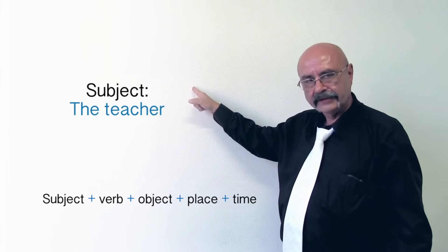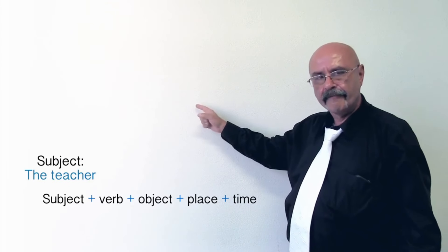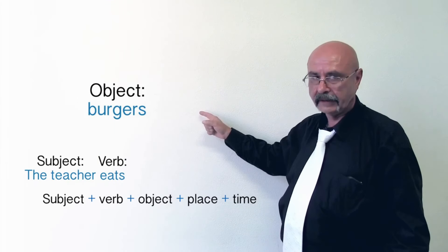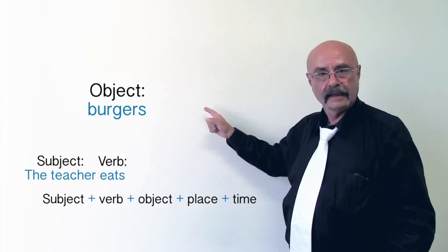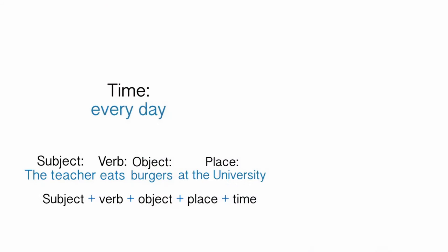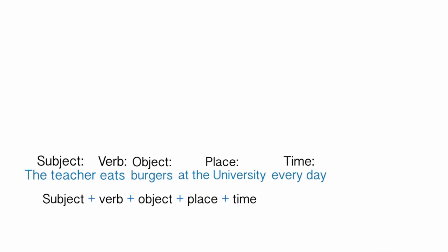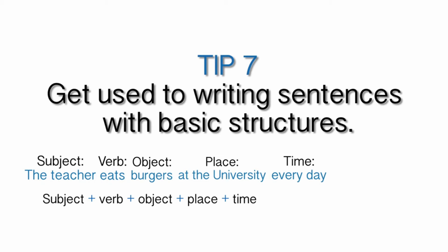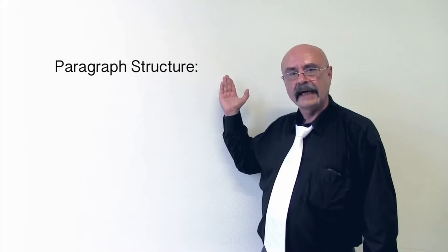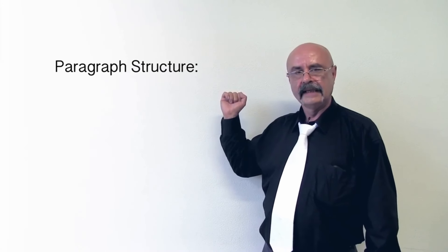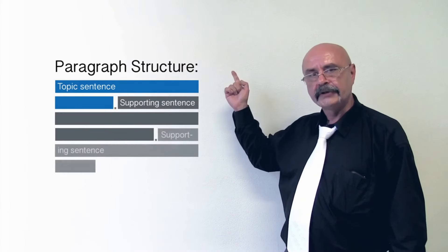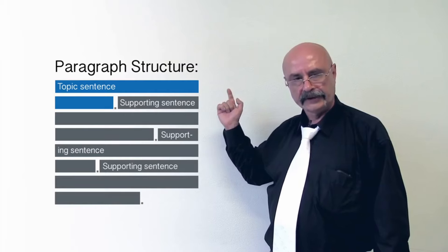I call it the skeleton of a sentence. First, the subject, verb, object — caution: sometimes we can have a sentence without an object — place, and time. Generally, a paragraph should have the following structure: each paragraph should have a topic sentence supported by two or three supporting sentences.